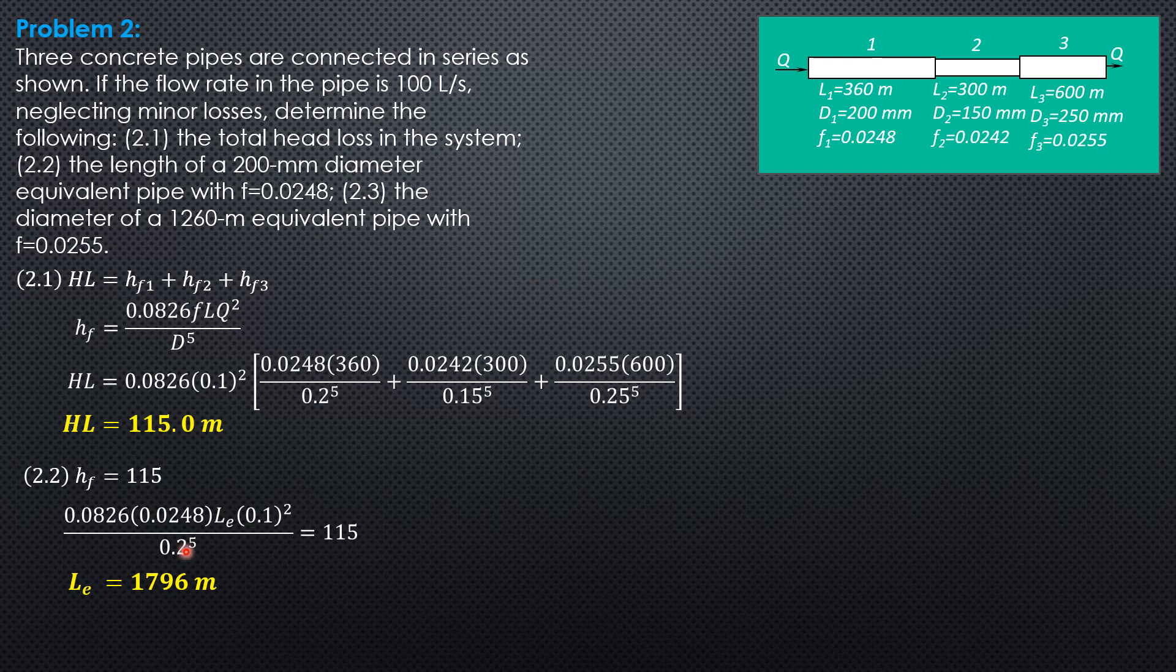but the diameter is to be, equivalent diameter is to be determined with friction factor 0.0255. So 0.0826 times 0.0255 times 1,260, 0.1 square over diameter equivalent to the fifth equals 115.